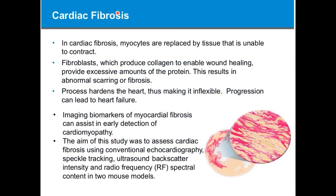Now I'm going to move on to cardiac fibrosis. For a little background, in cardiac fibrosis, the myocytes are replaced by tissue that is unable to contract. The fibroblasts, which produce collagen to enable wound healing, provide excessive amounts of the protein, and this results in abnormal scarring. The process hardens the heart, making it inflexible, and the progression of the disease will lead to heart failure.